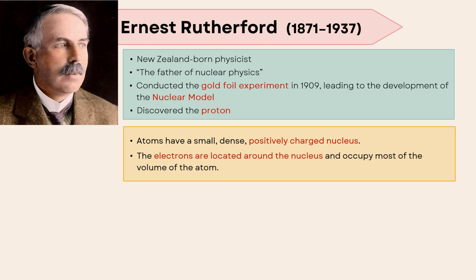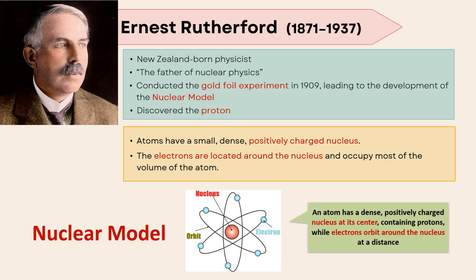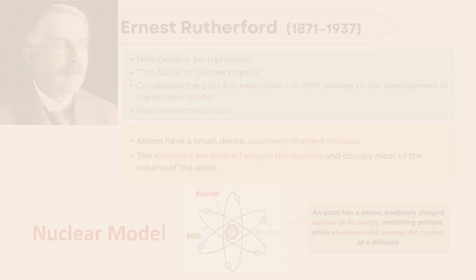The electrons are located around the nucleus and occupy most of the volume of the atom. In the nuclear model, an atom has a dense, positively charged nucleus at its center containing protons, while electrons orbit around the nucleus at a distance.